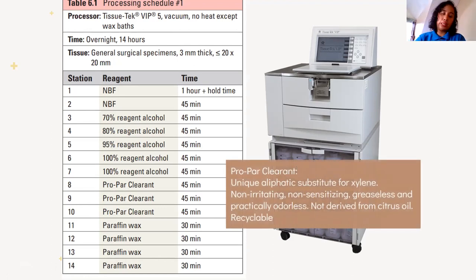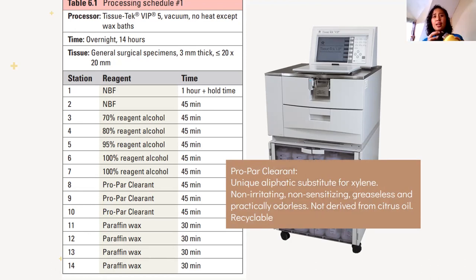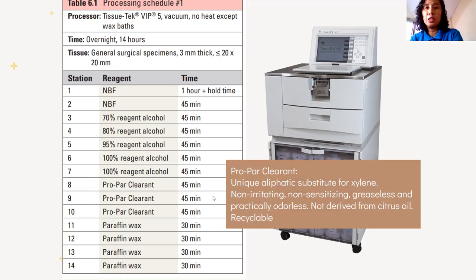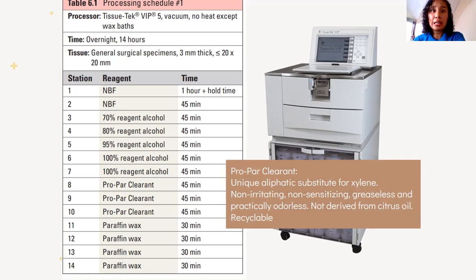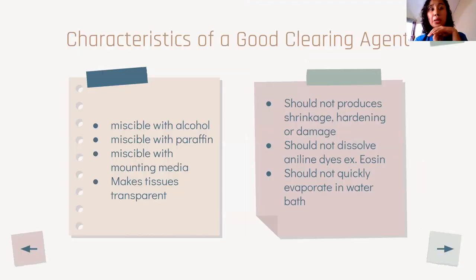Propart clearance is a good substitute for xylene. It is non-irritating, non-sensitizing, greaseless, and practically odorless. It is not derived from citrus oil and is recyclable — you can reuse it. It's better than xylene. If you are using a tissue processor, use the clearing agent recommended by the manufacturer; for example, the tissue processor may recommend propart clearance rather than xylene.